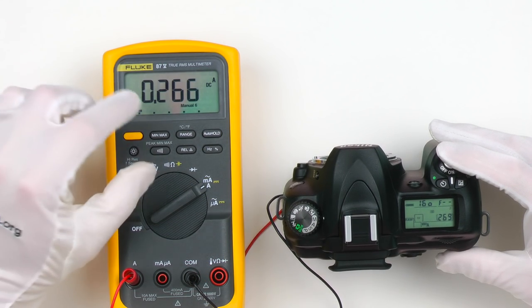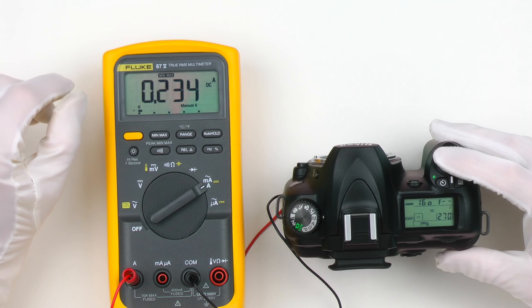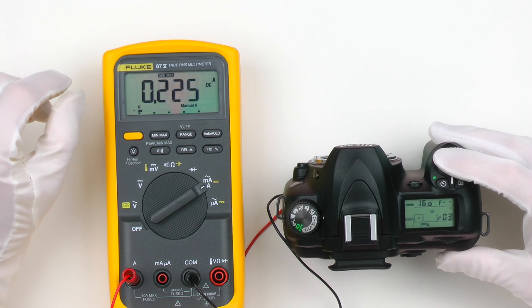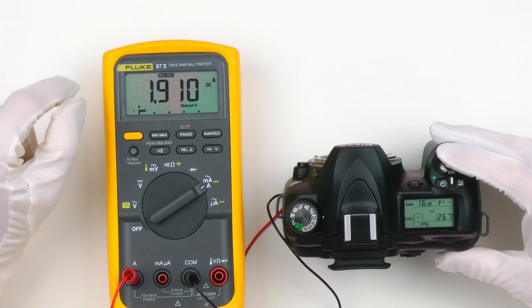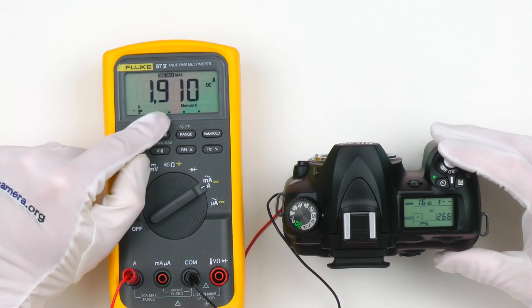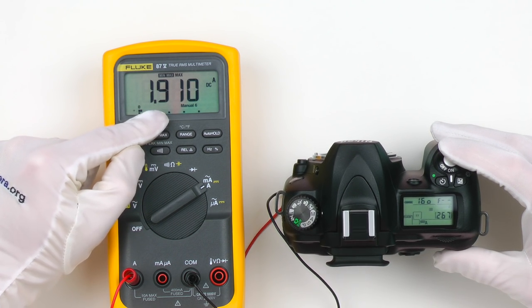Let's see what happens when I take a picture with this camera. The maximum is almost 2 amps. Up to 2 amps while taking a picture.